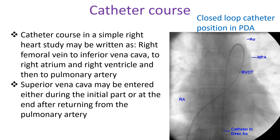Catheter course in a simple right heart study may be written as right femoral vein to inferior vena cava to right atrium and right ventricle and then to pulmonary artery. Superior vena cava may be entered either during the initial part or at the end after returning from the pulmonary artery.